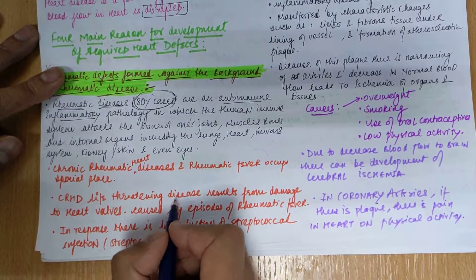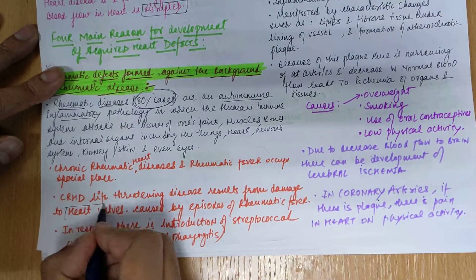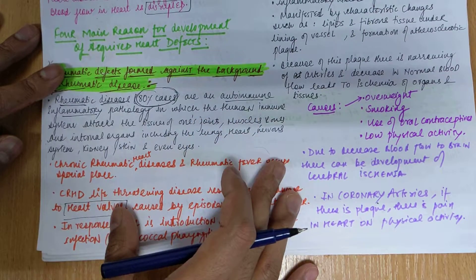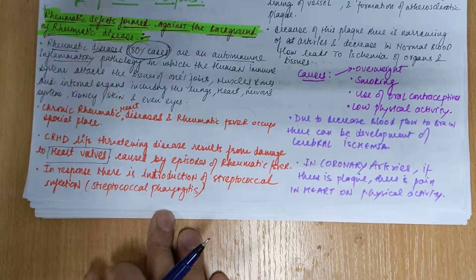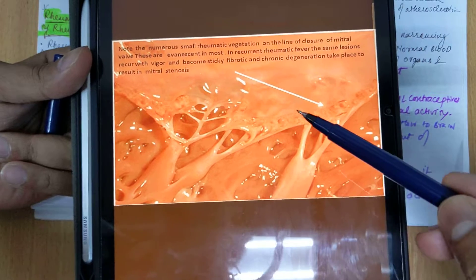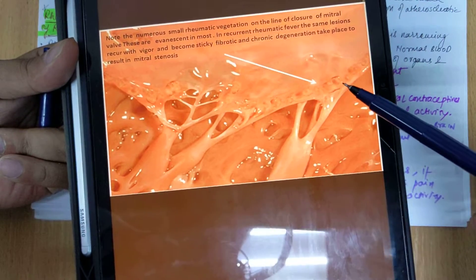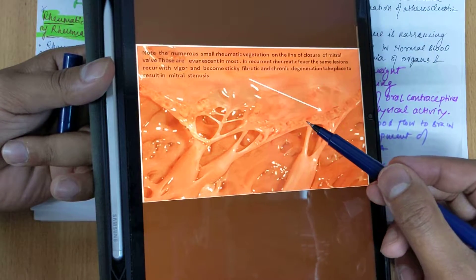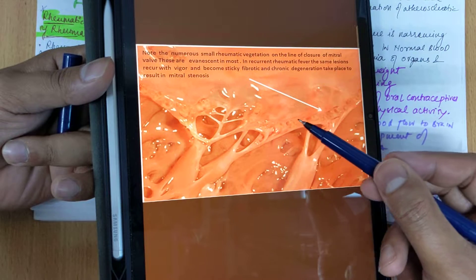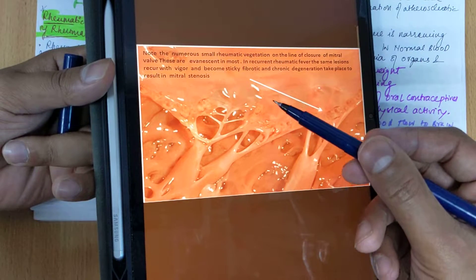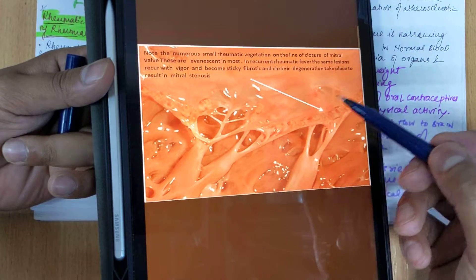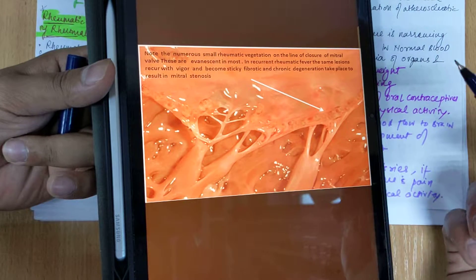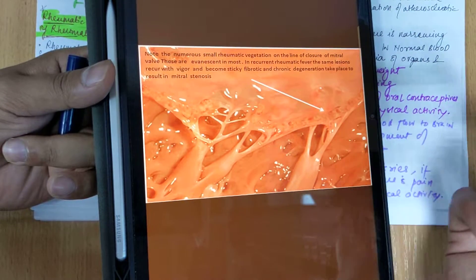Chronic rheumatic heart disease is a life-threatening disease which results from damage to heart valves, caused by episodes of rheumatic fever. In this image you can see the mitral valve is damaged — there are numerous small rheumatic vegetations lining the closure. These are small rheumatic vegetations near the mitral valve, and with recurrent rheumatic fever there can be small lesions, development of fibrotic tissue, and further calcification and chronic degeneration of the valves.